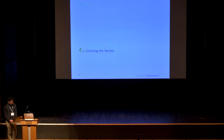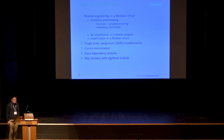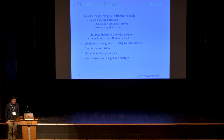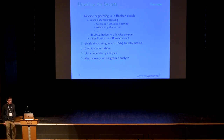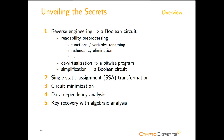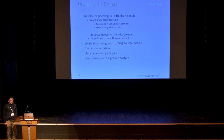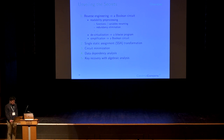Now let's have a look at how we break it in five steps. First, we perform human reverse engineering where three sub-steps are taken: readability processing, where we rename all the functions and variables in an understandable way and clean up all the redundancies; then we remove the virtual machine to obtain a bitwise program; and we further simplify the bitwise program into a Boolean circuit. After that, we transform the Boolean circuit into single static assignment form and minimize it. Then we perform a deep dependency analysis to extract structural leakage of this implementation. Finally, we recover the key with the help of some algebraic analysis.